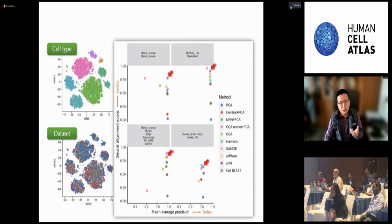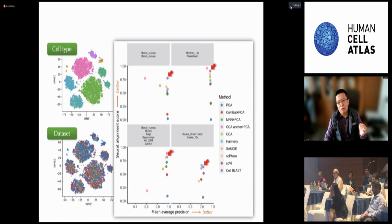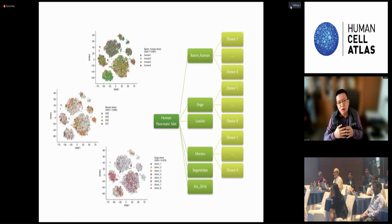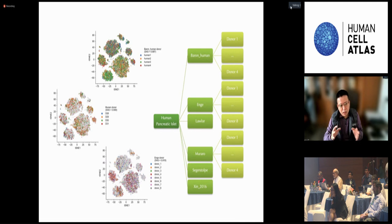The model can handle batch effect effectively. As the pancreatic dataset shown here, the model is able to align cells of the same type from distinct datasets correctly, even if the original data shows strong batch effects. Further benchmarks demonstrate that the model performs best over other methods, especially for more complex multi-level batch effects, which is part of the uniqueness of our model.